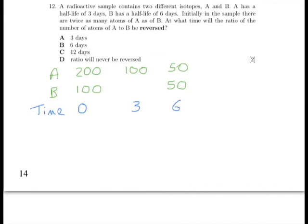So at this point, they're on equal footing. We're interested in the point where the ratio is reversed, that is, there are twice as many B's as there are A's. So let's keep going with this pattern.